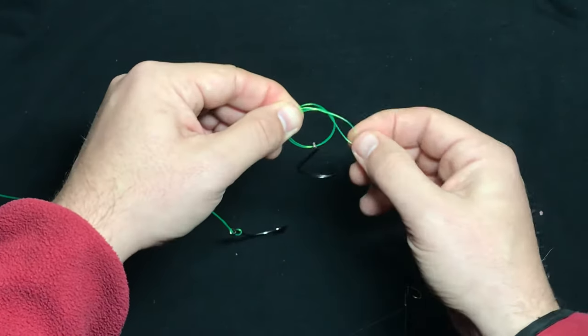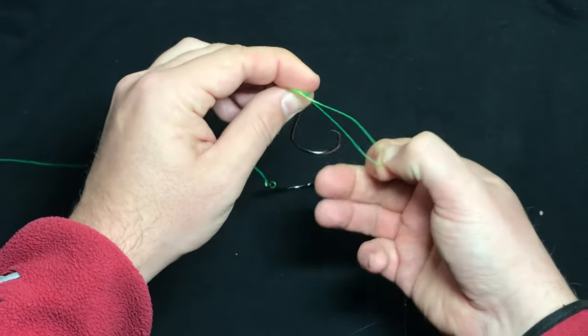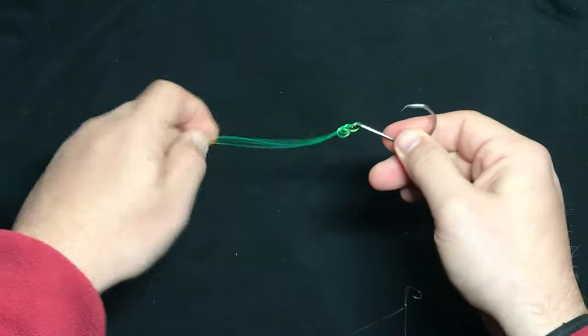And I'm going to take this closed end loop right here, pull it tight a little bit, not all the way. I'm going to wrap it around the hook and pull it tight.